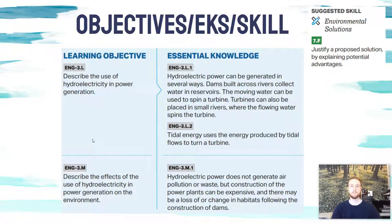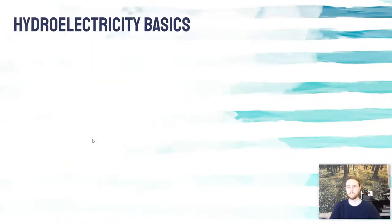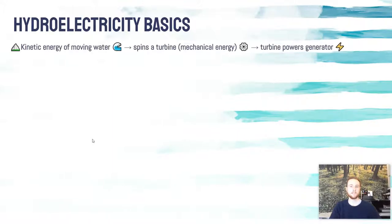The skill we'll practice at the end of today's video is to be able to justify a proposed solution. So the first thing we'll do today is look at some hydroelectricity basics. Hydroelectricity comes from the movement, or the kinetic energy, of moving water. In this case, water is going to move past a turbine, which will spin the turbine.